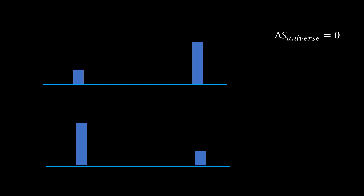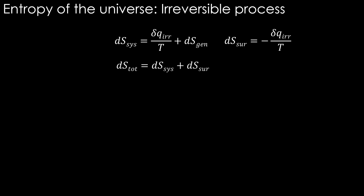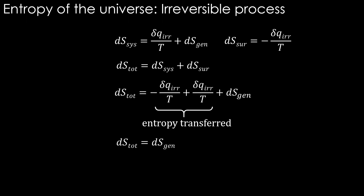Let's see what happens in the irreversible process. Although in the irreversible process the system receives heat irreversibly, the surrounding is usually a vast reservoir and it supplies heat reversibly. dS_system is equal to delta Q_irreversible divided by T plus delta S_generated. The surrounding is usually huge and can be treated to supply heat reversibly, so its entropy change equals minus the same heat divided by the temperature. The entropy change of the universe, the total entropy change, is the summation of these two, which turns out to be equal to the entropy generated. Therefore, the entropy change of the universe is not zero but greater than zero — in an irreversible process, the entropy of the universe increases.